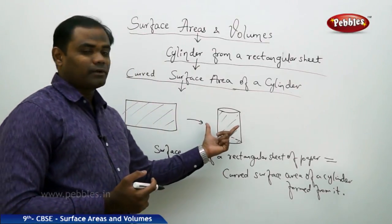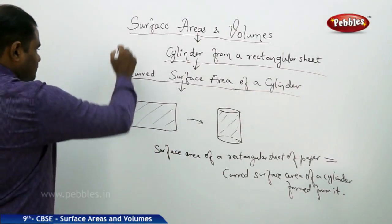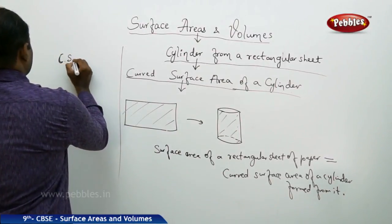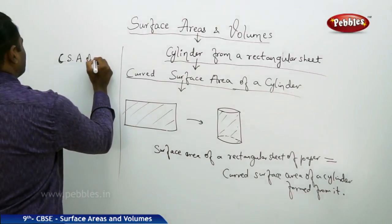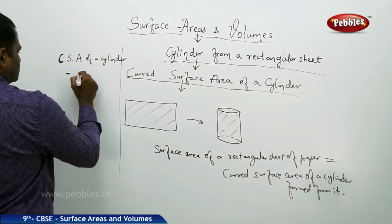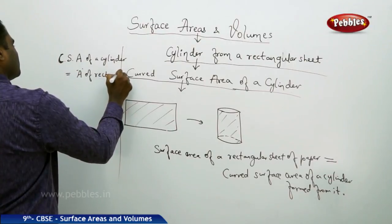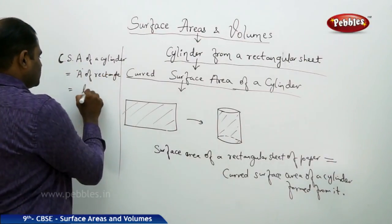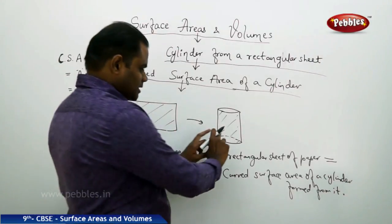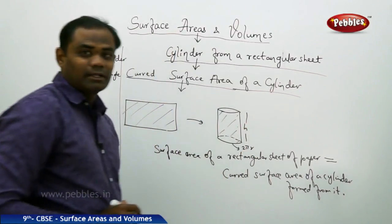So when you want to find the curved surface area of a cylinder, we connect it with the area of the rectangle. Curved surface area, denoted CSA of a cylinder, is nothing but area of rectangle — that is length times breadth. My length which forms the circumference gives me 2πr, and the breadth gives me the height h.